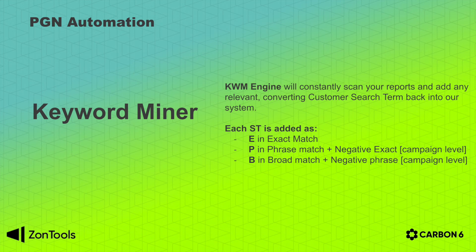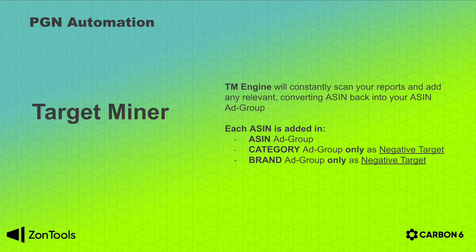In phrase, we add it as phrase match plus negative exact on the campaign level. In broad, we add it as broad match plus negative phrase on the campaign level. The third engine is the target miner. While keyword miner scans your search term reports, target miner will scan your target reports and add any relevant converting ASINs back into your ASIN ad group, and negate them away from the category and brand ad group. We will also negate them away from the auto ad group to maintain ASIN isolation. So these two engines find good ASINs and good search terms and mine them.